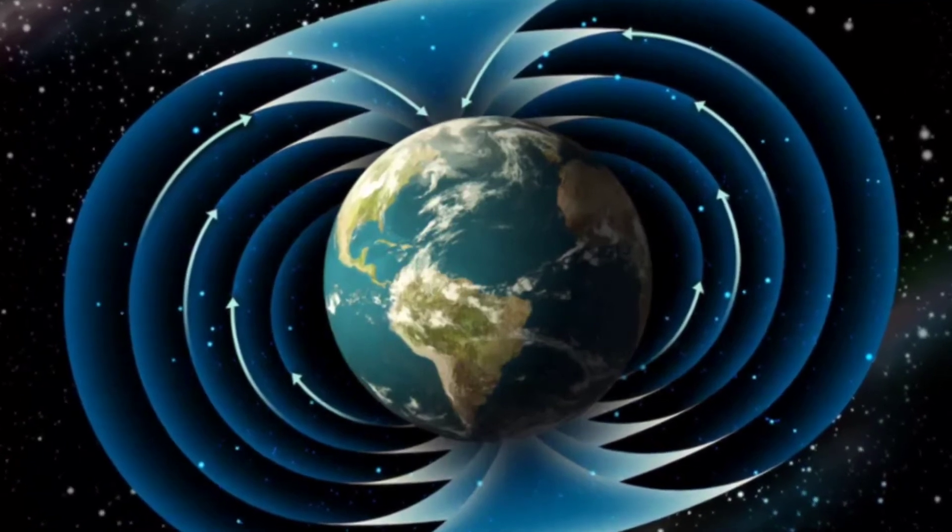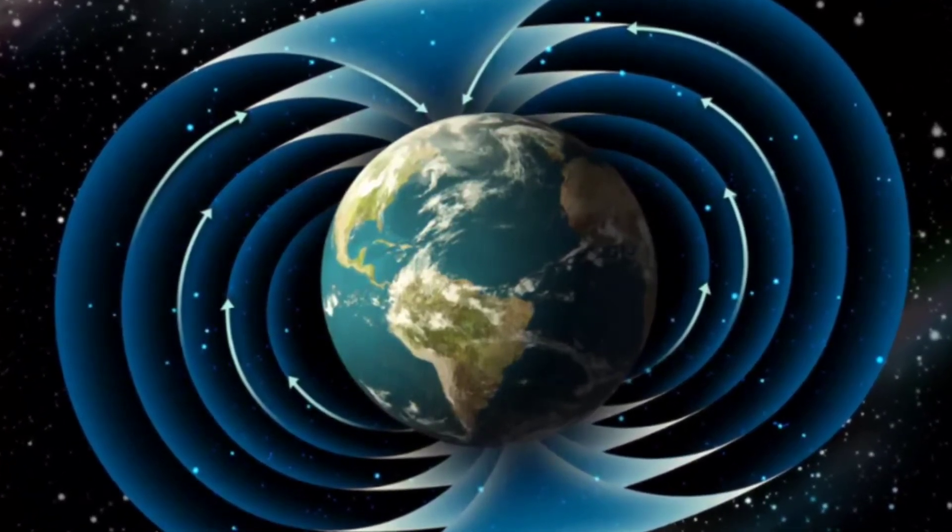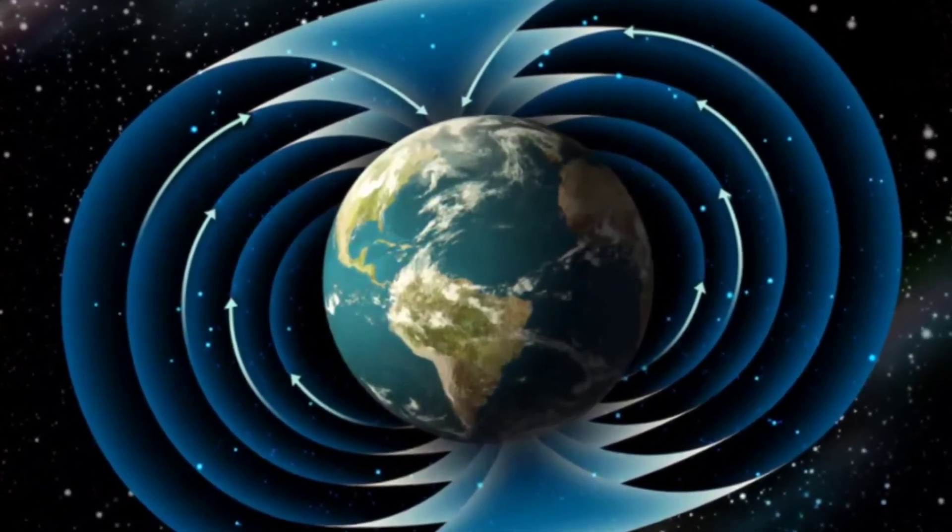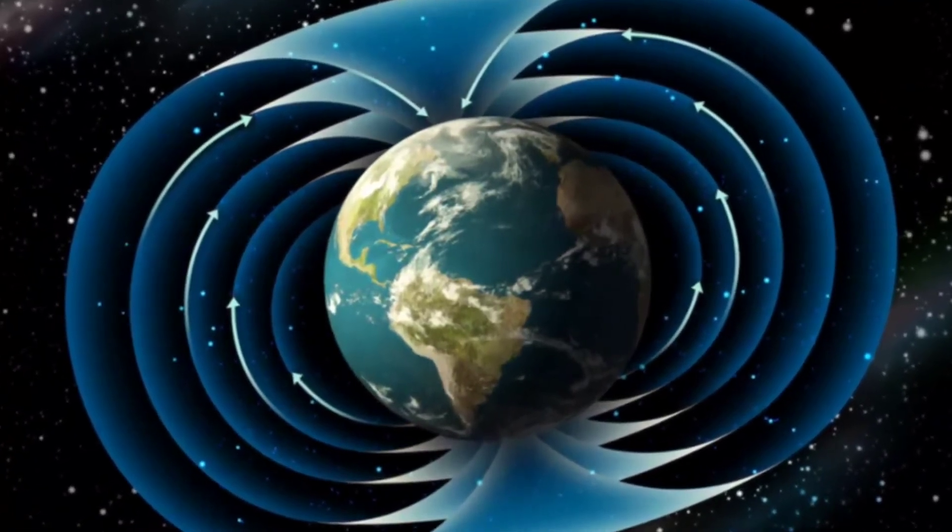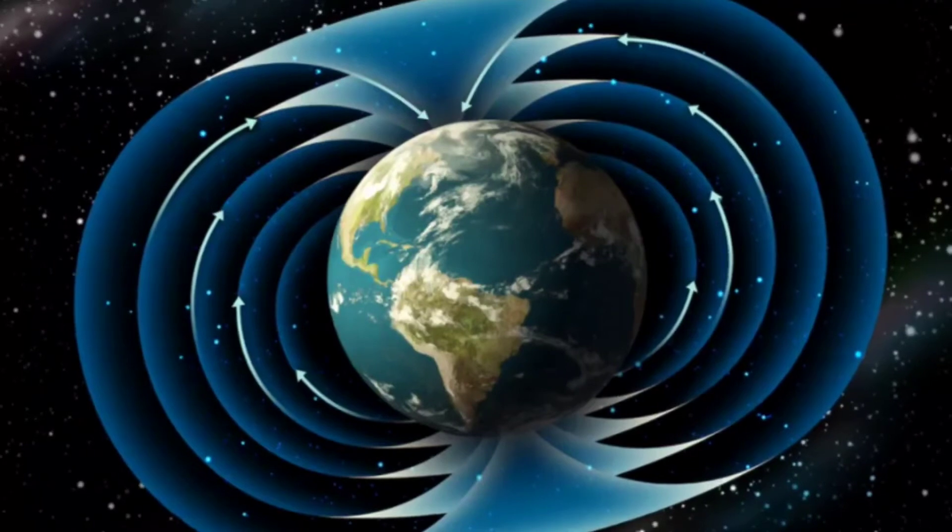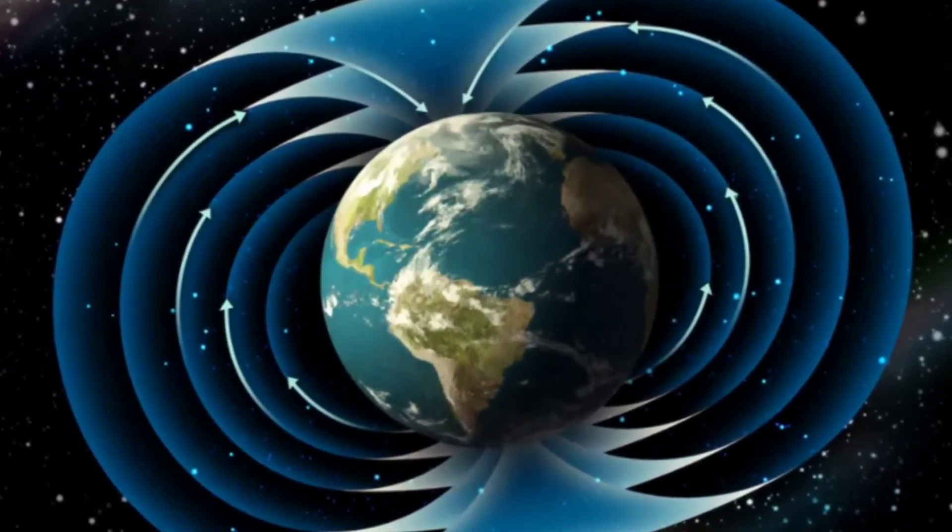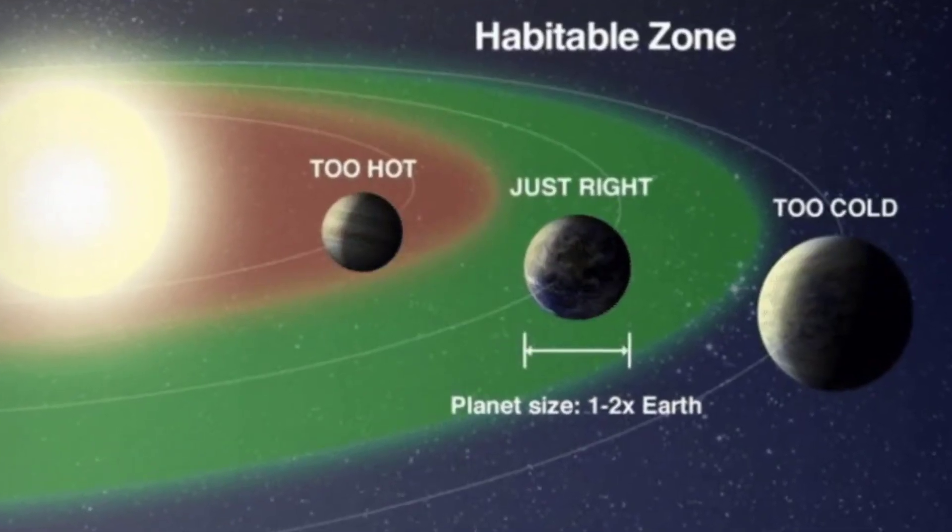Earth is also composed of a molten metallic core that supports a magnetic field. It is the magnetic field that prevents lethal cosmic rays or the solar winds from showering Earth's surface.